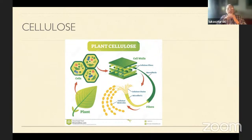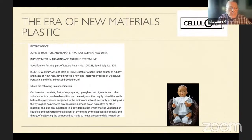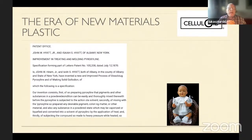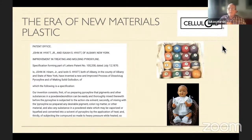Cellulose is a building material out of which the cell walls in plants are built. In the 1860s, several independent inventors, chemists, engineers, and adventurous people came to almost the same technical conclusion. The first patent for the material called celluloid was patented by the American inventor Hyatt.